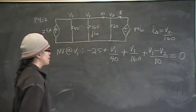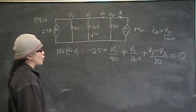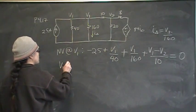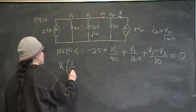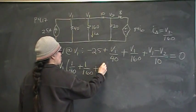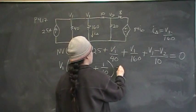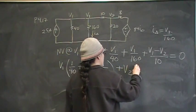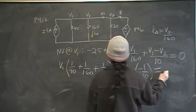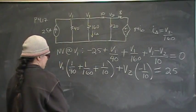That's KCL. Every term that I have in here is a current term. So now I'm going to start grouping together my coefficients and letting my calculator do the hard work. So my coefficients for V1 are 1 over 40 plus 1 over 160 plus 1 over 10. My coefficients for V2 is negative 1 over 10, and constants go on the other side, and that is the first equation that I need.